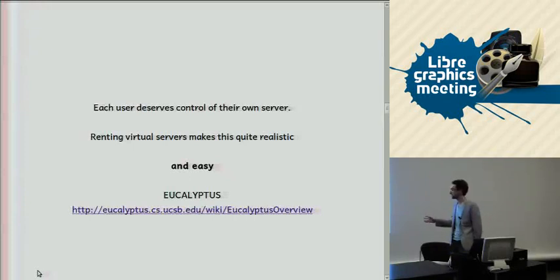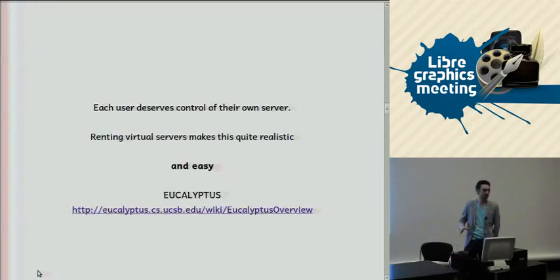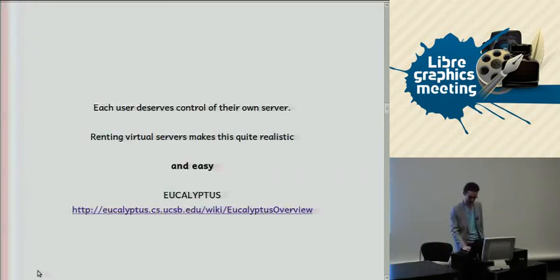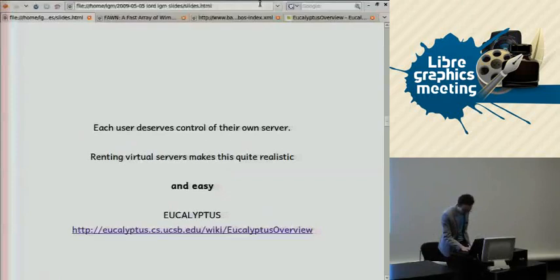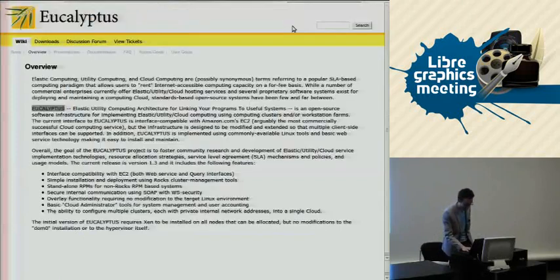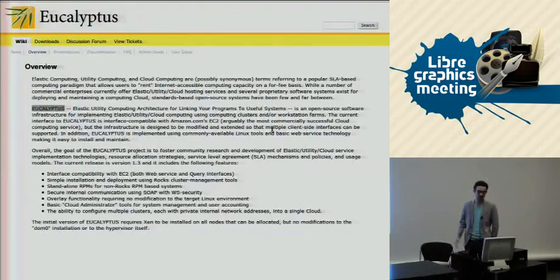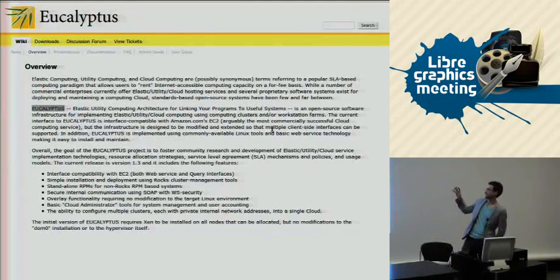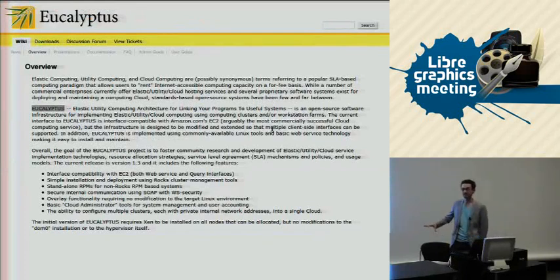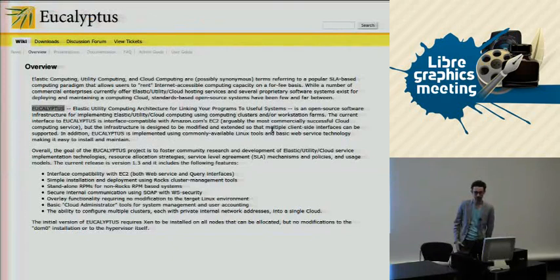There's a project called Eucalyptus which I'd mention — it's a free software re-implementation of Amazon. They've looked at Amazon EC2, figured out the basic building blocks, and put it together so that you can run your own instance if you wanted to.